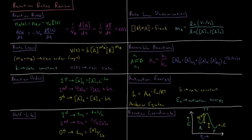The orders mA and mB might be integers — 0, 1, or 2 — or possibly half-integers as well, but in general we look at integers. The sum of mA and mB is called the reaction order, which can be determined from experiment.